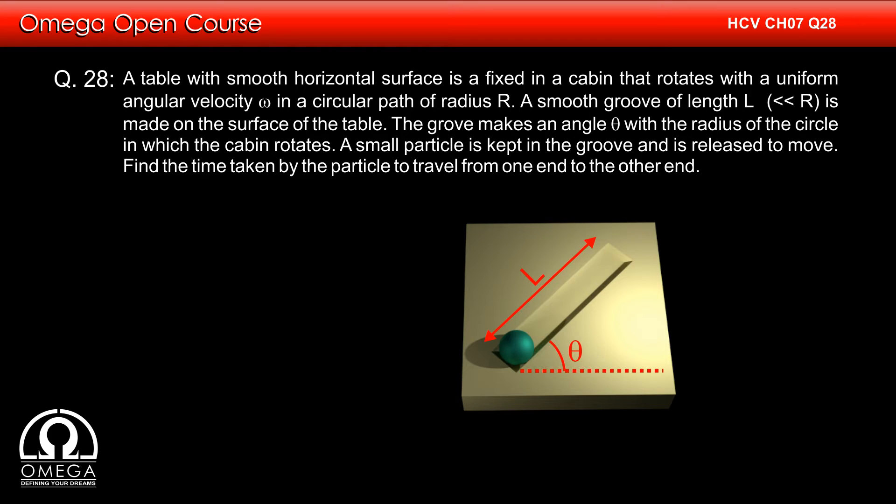A table with a smooth horizontal surface is fixed in a cabin that rotates with a uniform angular velocity omega in a circular path of radius R.